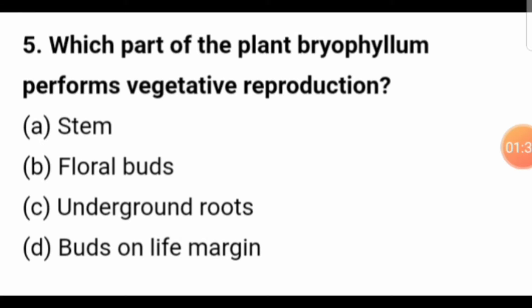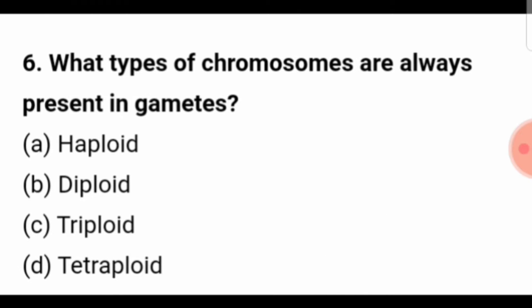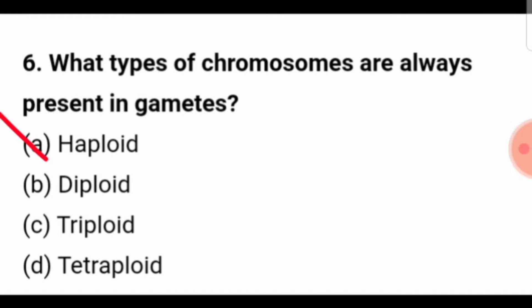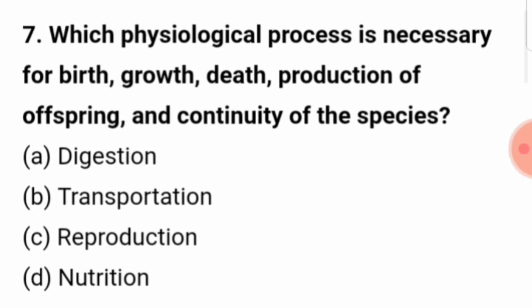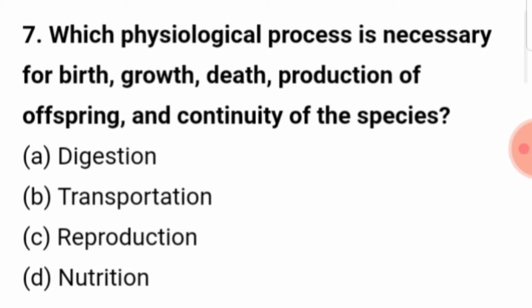Which part of the plant bryophyllum performs vegetative reproduction? The correct answer is buds on the leaf margin. What type of chromosomes are always present in gametes? The type of chromosomes always present in gametes are haploid. Which physiological process is necessary for birth, growth, death, production of offspring and continuity of the species? The right answer is reproduction.